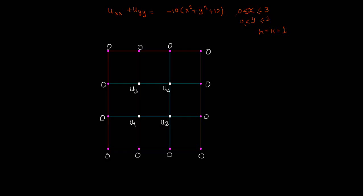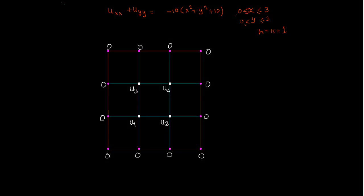Okay, so now we'll see the Poisson equation. Suppose that u_xx plus u_yy equals minus 10(x² + y²) plus 10.